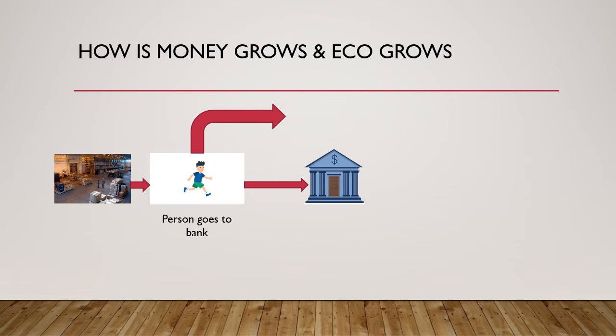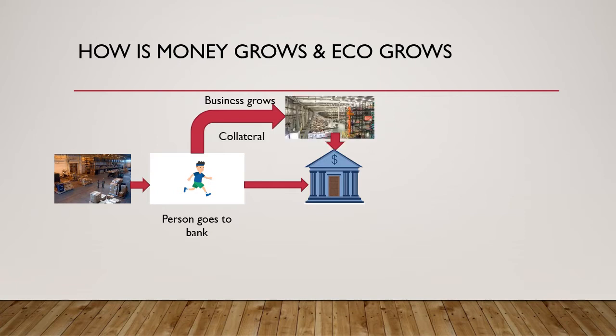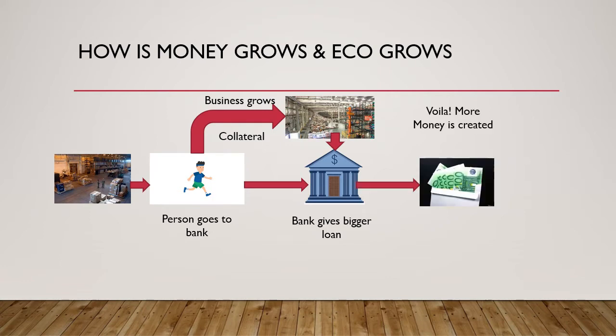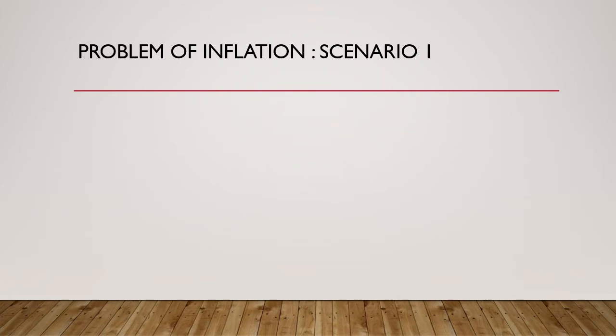Let's see how money grows in the system. The person who took the loan from the bank invests in his business and his business luckily grows. The person sees future demand and approaches the bank for more loan. Since the business has grown and the person has a bigger collateral to offer, the bank gives him a bigger loan — and voila, more money is created in the economy. But now comes the problem in the form of inflation.